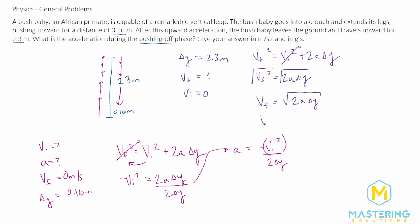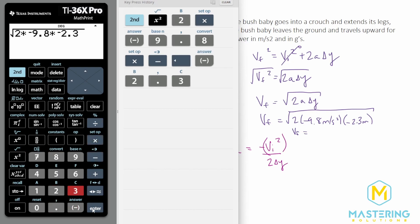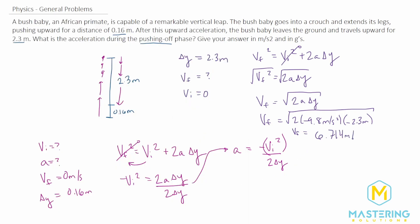So v final equals the square root of 2 times the acceleration times delta y. And now we can plug in our values. v final is going to be equal to the square root of 2 times the acceleration, and the only thing that's acting on it when it's in the air is gravity. So we have negative 9.8 meters per second squared times the delta y. Since we're starting at the top and going downward, it will be a negative delta y of negative 2.3 meters. The two negatives will cancel, giving us a positive value. The square root of 2 times negative 9.8 times negative 2.3 gives us 6.714 meters per second.